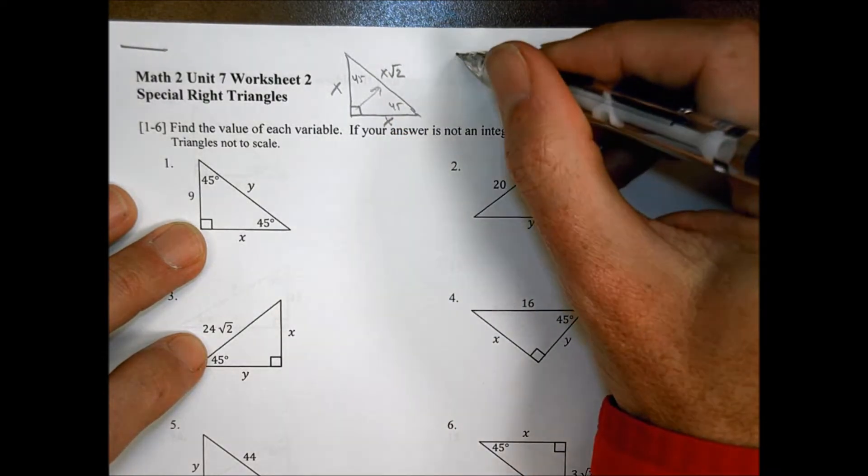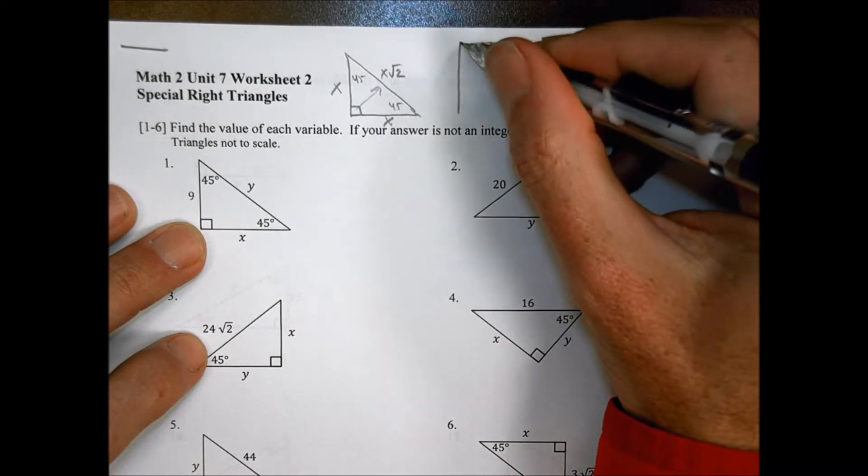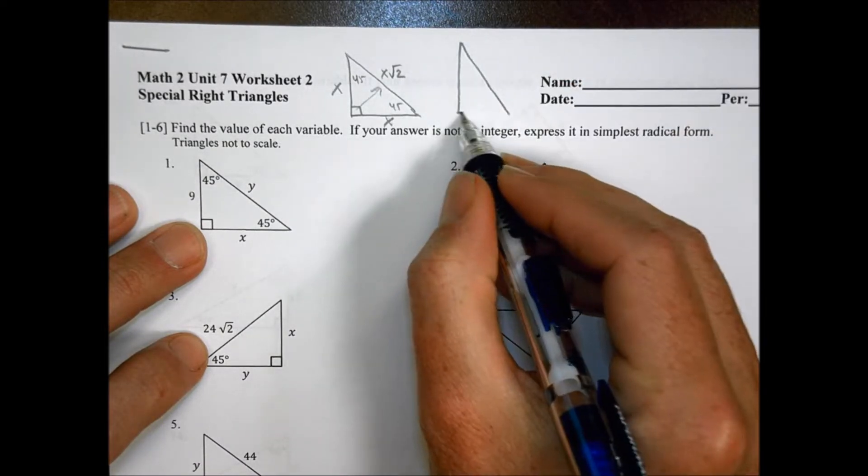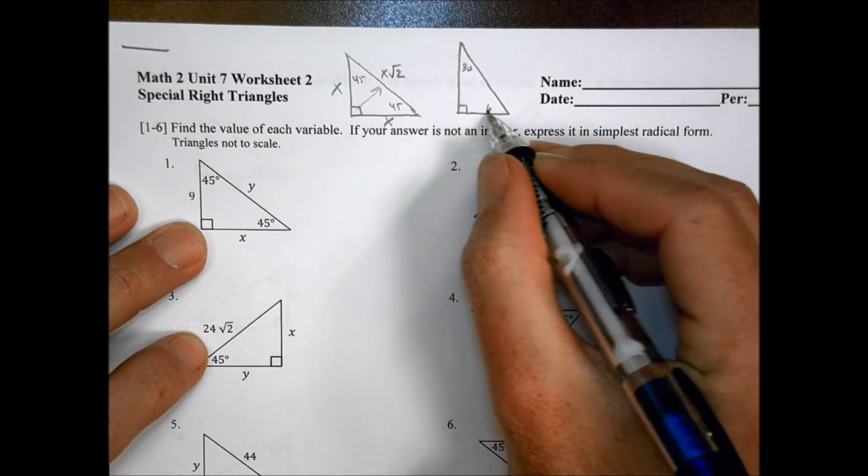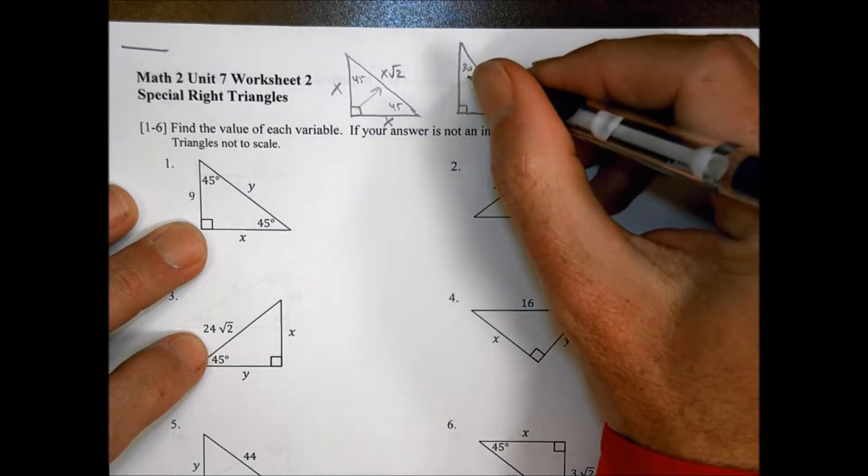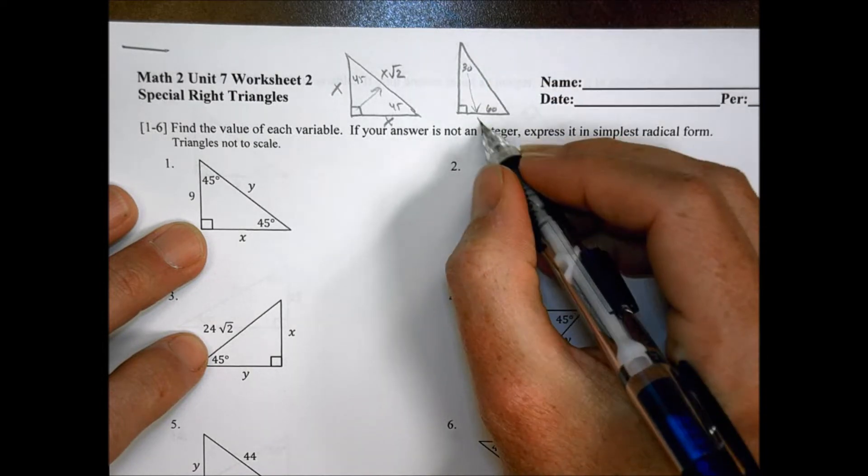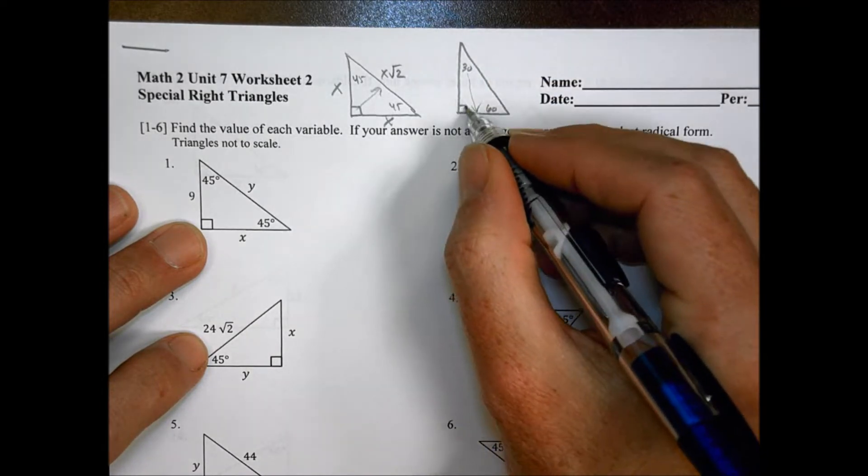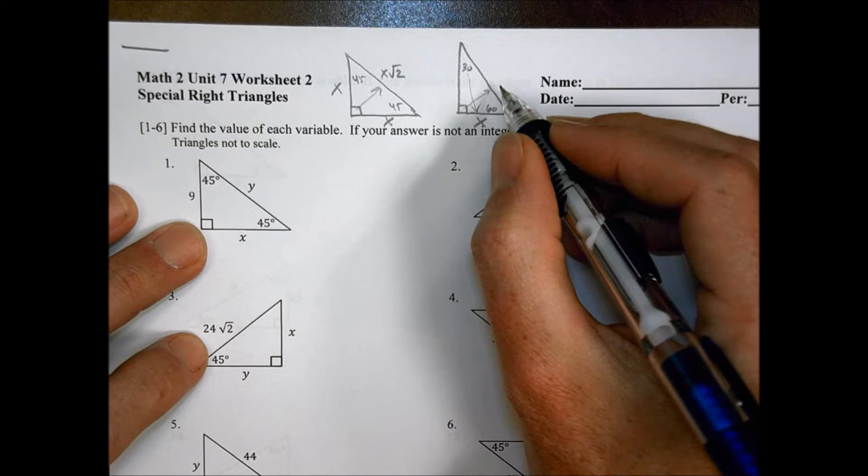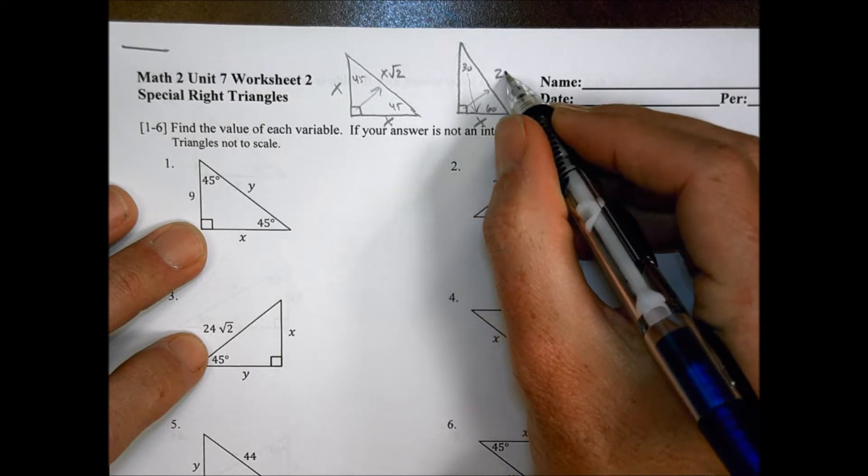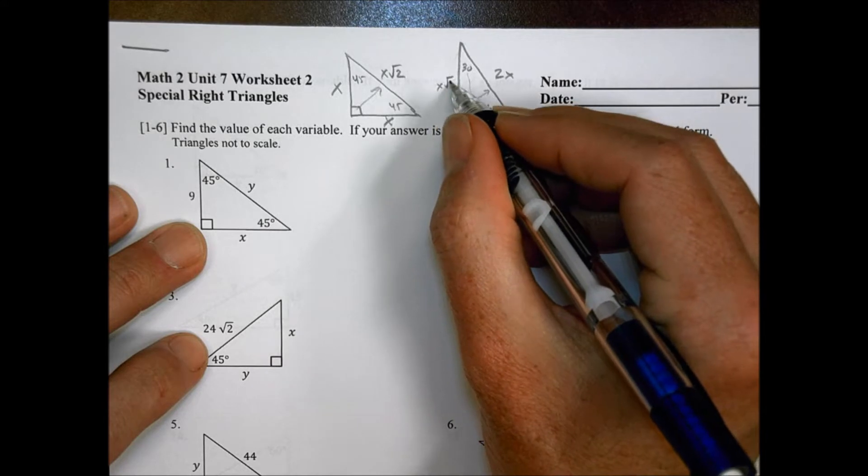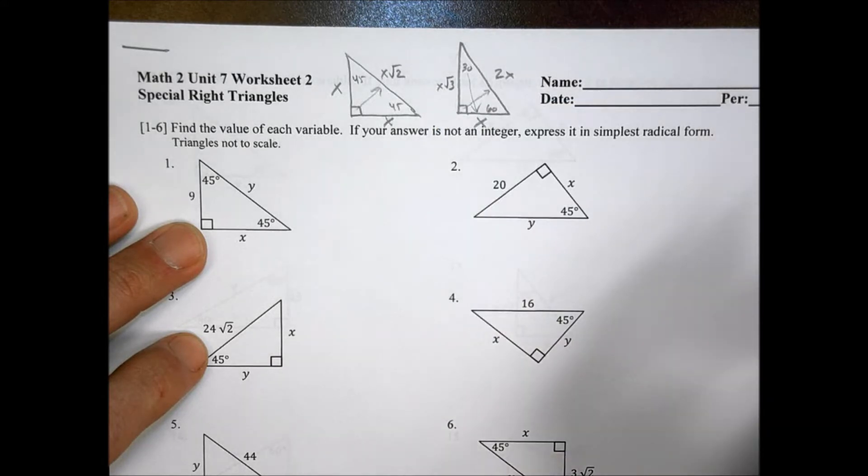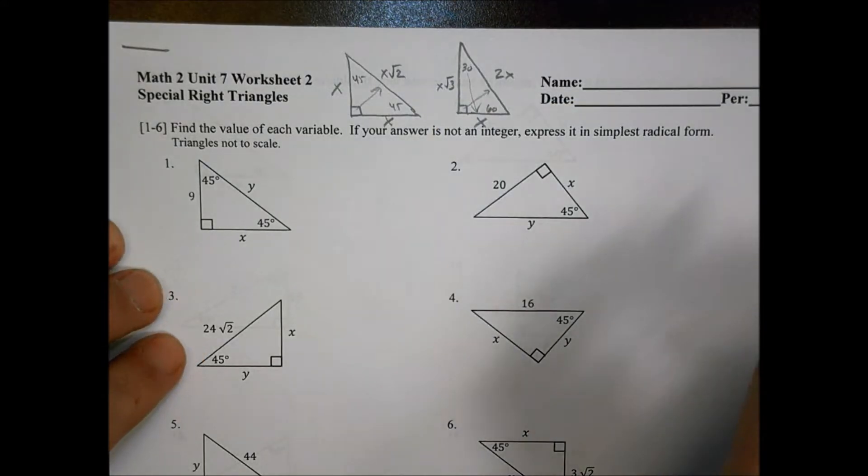The other special right triangle we're talking about today is when we have a 30-60-90 triangle. If we have a 30 over here and a 60 over there, our small side, the one across from the 30, becomes our X value. The hypotenuse across from the 90-degree angle becomes a 2X, and then the one across from the 60 becomes an X root 3. So those are the two special types of triangles we're going to deal with today.